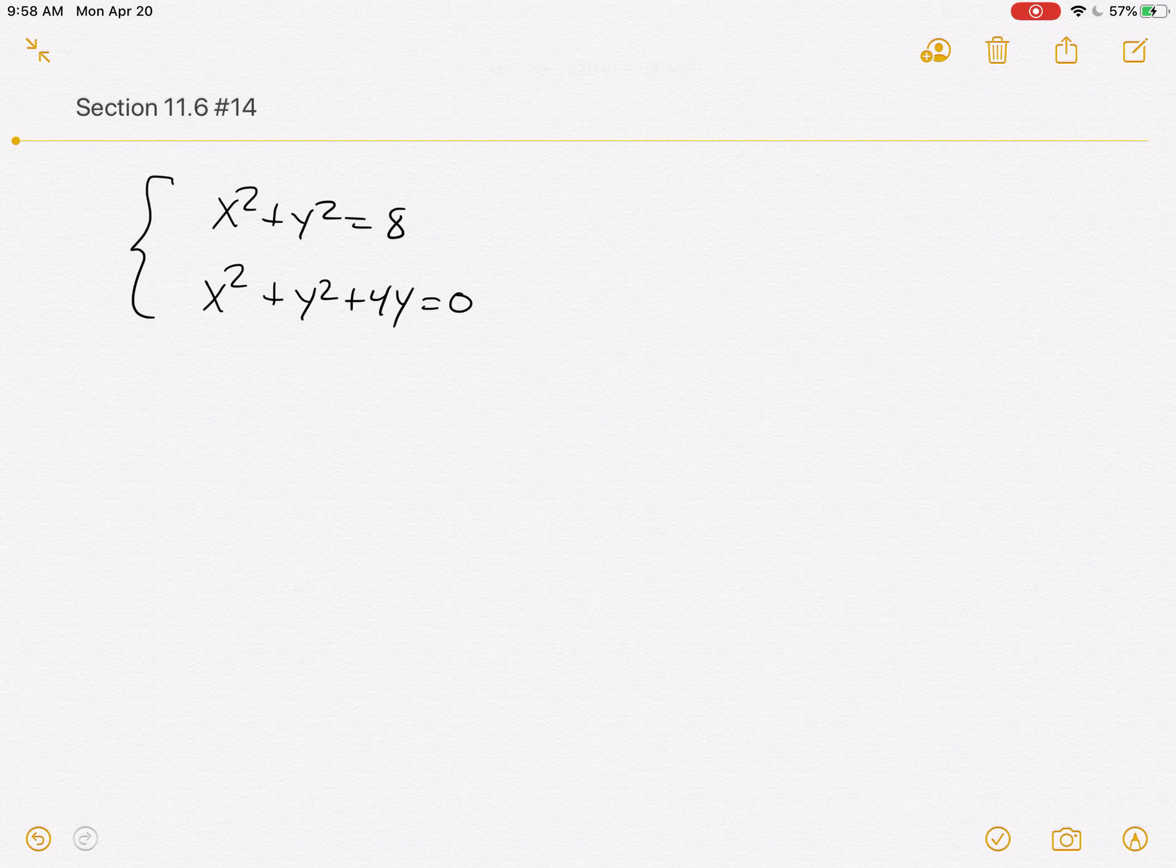These have both x squared and y squared, so they're either a hyperbola or an ellipse. Because both are positive, it's going to be an ellipse. And because the coefficients out in front are all one, it's going to be actually a circle. So these are two circles that are intersecting with one another.